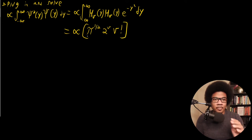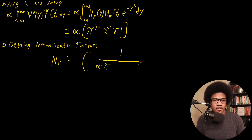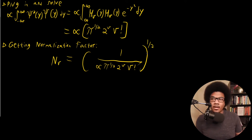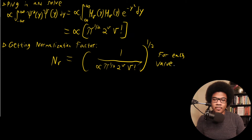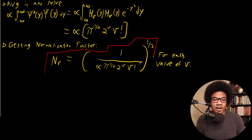So now to get the normalization factor, we just put this result under one and take the square root, just like we always do. The normalization factor is going to be equal to one over the square root of alpha times square root of pi times 2^nu times nu factorial, raised to the one half. This is going to be valid for each value of nu — so for each value the normalization factor is going to be different, depending on what your quantum number is. But this gives us a general normalization factor so that each time we don't have to necessarily solve for it from scratch — we just plug into this equation.